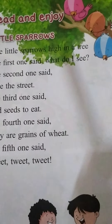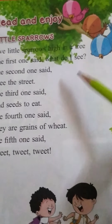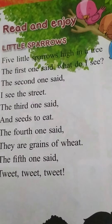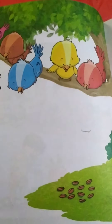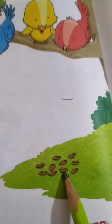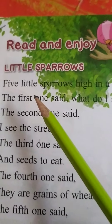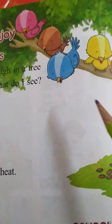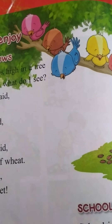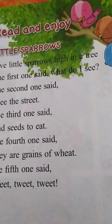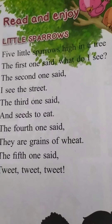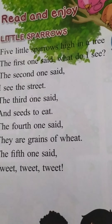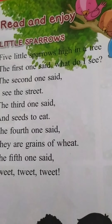Nice rhyme, right! So the birds are talking about the grains — they want to eat them. You can see the seeds here. So, how many sparrows are there on the tree? Five sparrows. The first one asked, what do you see? The second one said, I see a street.